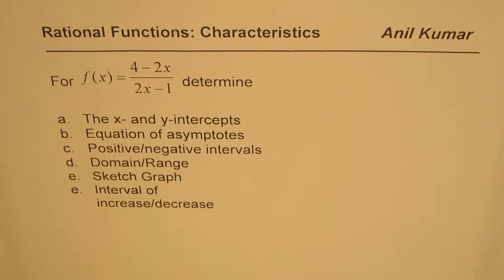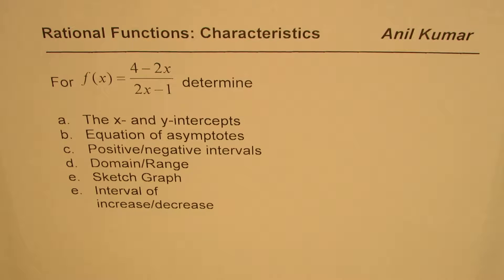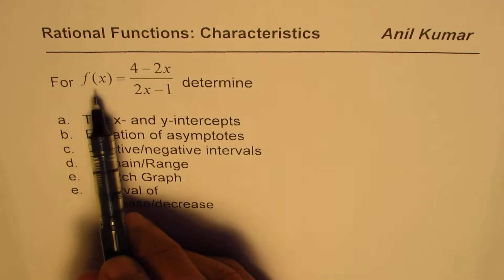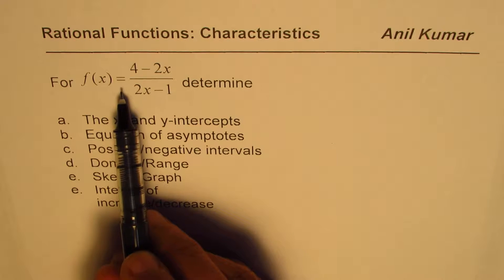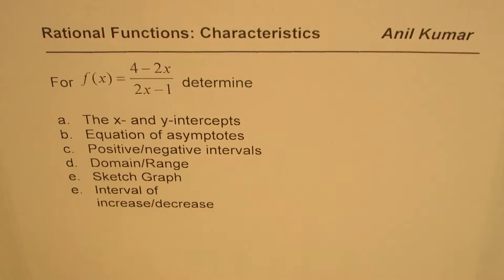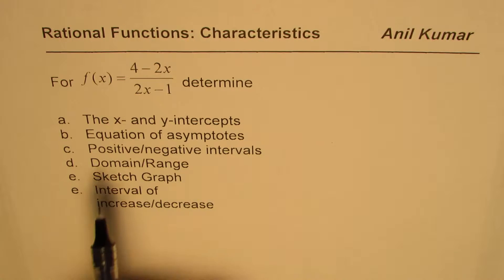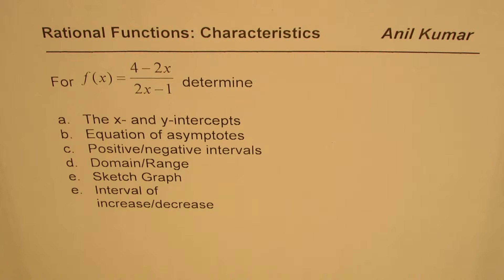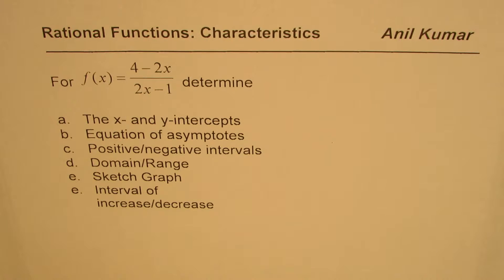I'm Anil Kumar and in this video we will write the characteristics of a rational function which is f(x) = (4 - 2x) / (2x - 1). We are going to look into x and y intercepts, equation of asymptotes, positive and negative intervals, domain and range, sketch the graph, and find the interval of increase and decrease.